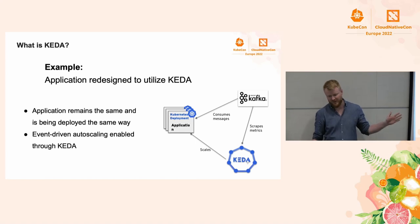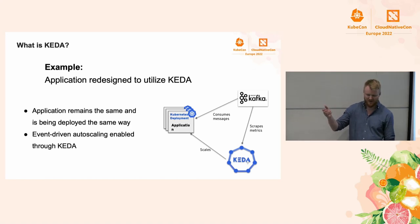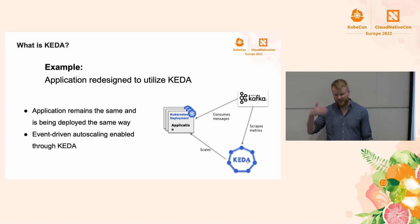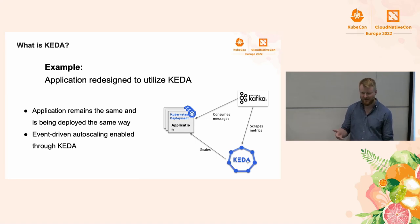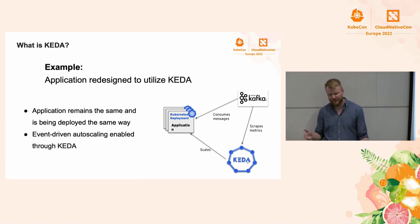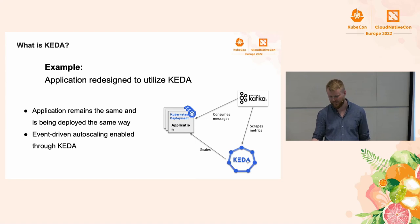Here is the example application redesigned to use KEDA. You don't have to change the application or the deployment — you just plug it in. KEDA will scrape metrics from the external service; in this case, the Kafka topic. Based on the number of unprocessed messages, it will automatically scale the application, and if there are no messages it can also scale down to zero. This is something HPA currently cannot do.